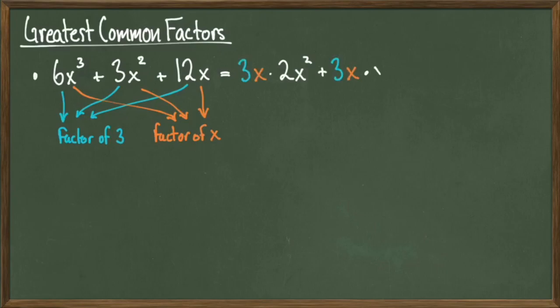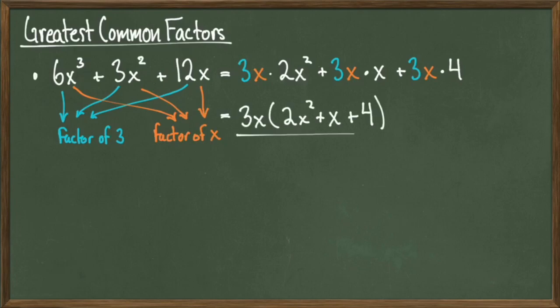When I take 3x away from 6x cubed, I leave behind a 2x squared. When I take 3x away from 3x squared, I leave behind an x. And when I take 3x away from 12x, I leave behind a 4. Then I factor the 3x out and leave behind the remaining quantity in the parentheses. So I did exactly what I wanted to do. I've taken a large polynomial and wrote it as the product of 2 polynomials with smaller degree.